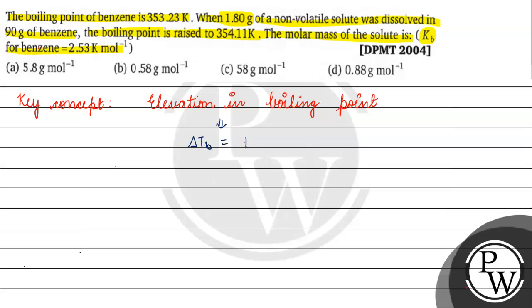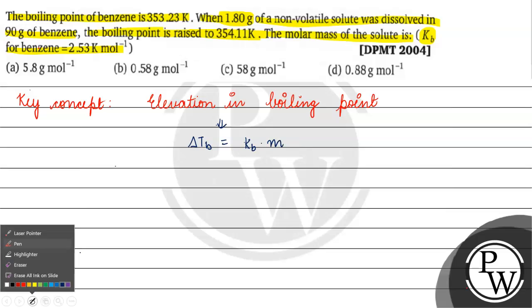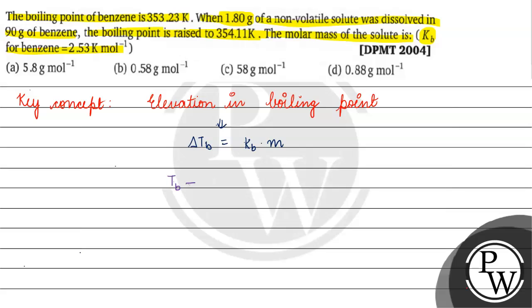Delta Tb is basically equals to Kb into molality. Delta Tb is basically equals to Tb, boiling point of the solution, minus Tb⁰, which is boiling point of the pure solvent, equals Kb into molality. Boiling point of the solution is 354.11 kelvin minus boiling point of pure solvent which is 353.23 kelvin. Kb is also given, 2.53 kelvin per mole.